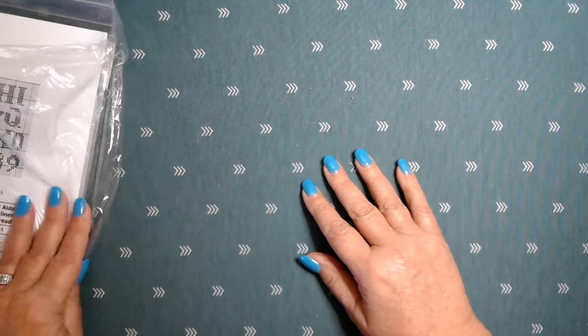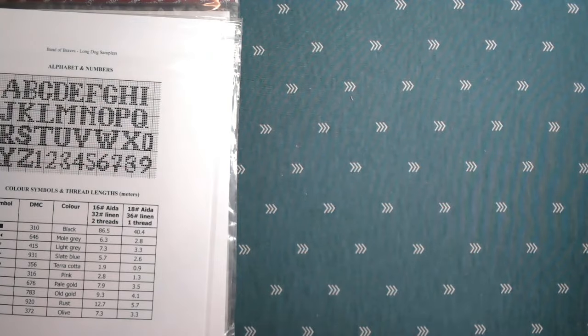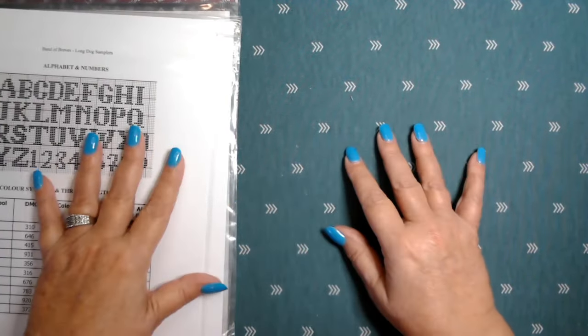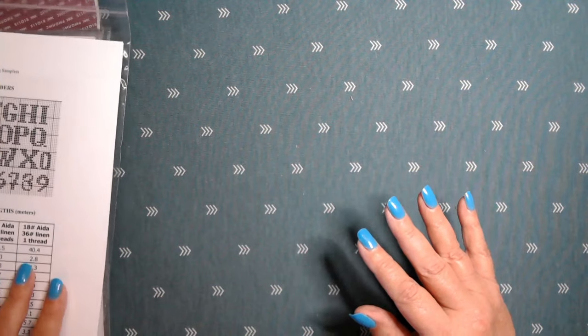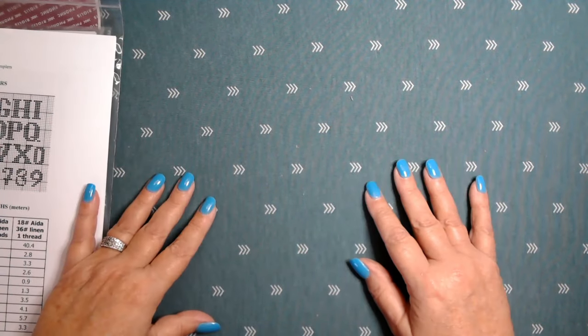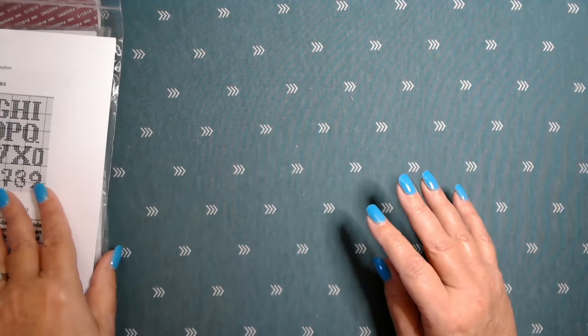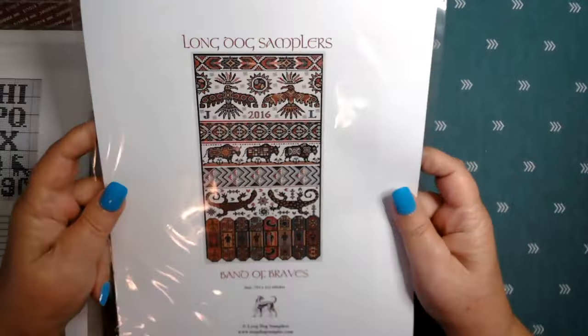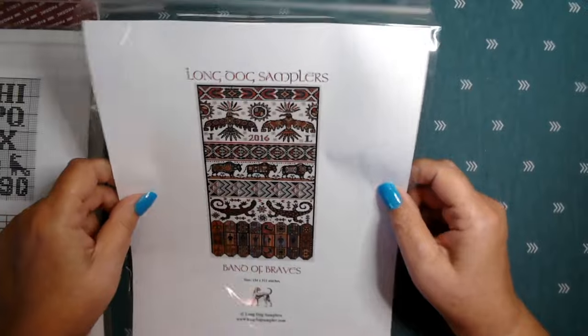Now 123stitch like I said is a great company out of Texas and I just love what they have. They have sales weekly. They have daily deals every day so if you haven't been to them and check them out please do. They have a lot of counted cross stitch kits and I have been wanting to get Long Dog Samplers.